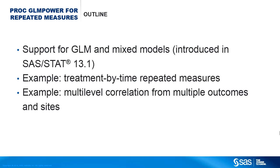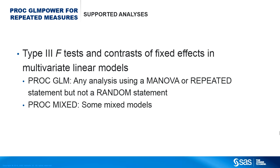The first example involves the classic treatment-by-time repeated measures design, in which two treatments are compared over multiple time points. The second example involves multiple sources of correlation — in addition to repeated measurements on the same subject, you can also have several outcomes at different sites. The statistical analyses newly covered in SAS-STAT 13.1 are Type III F tests and contrasts of fixed effects in multivariate linear models. This covers any models you can fit in PROC GLM using a MANOVA or repeated statement, but not a random statement, and also some cases of mixed models.